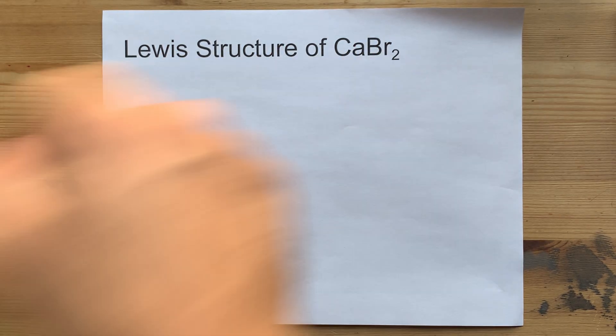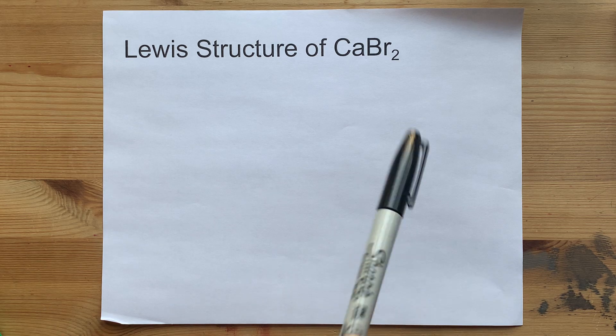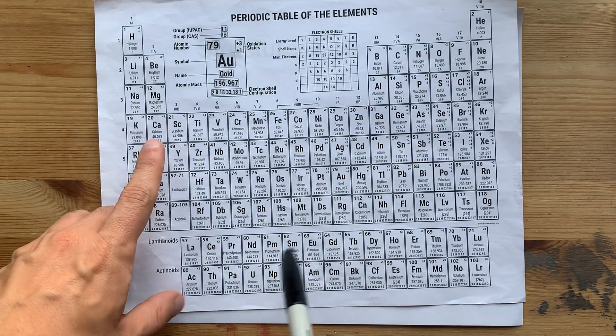I want to draw the Lewis structure of calcium bromide, CaBr2. Well, let's start by drawing Lewis diagrams for each of those atoms.